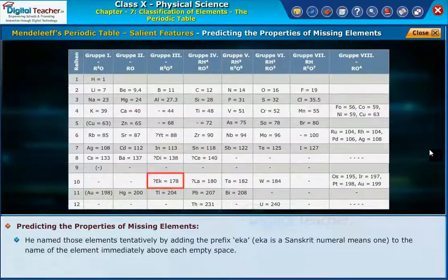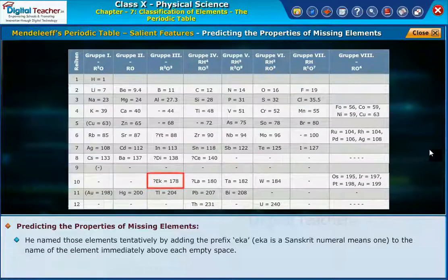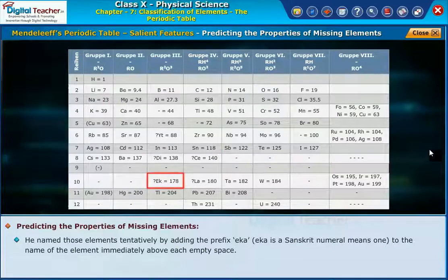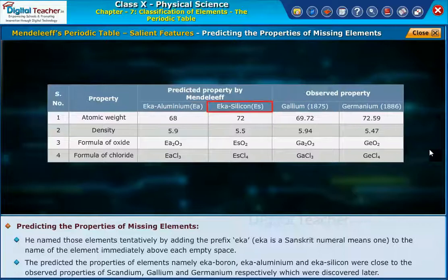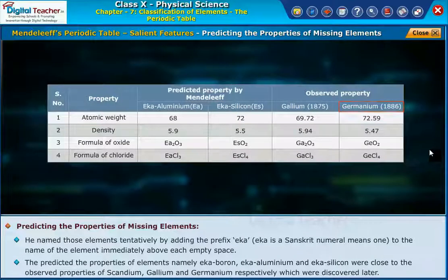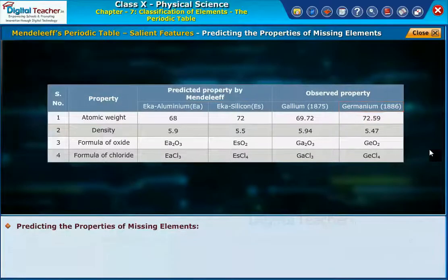He named those elements tentatively by adding the prefix 'Eka' — a Sanskrit numeral meaning 'one' — to the name of the element immediately above each empty space. The predicted properties of elements namely Eka Boron, Eka Aluminium, and Eka Silicon were close to the observed properties of Scandium, Gallium, and Germanium respectively, which were discovered later.